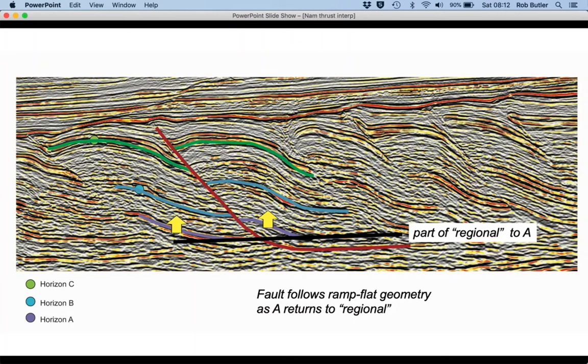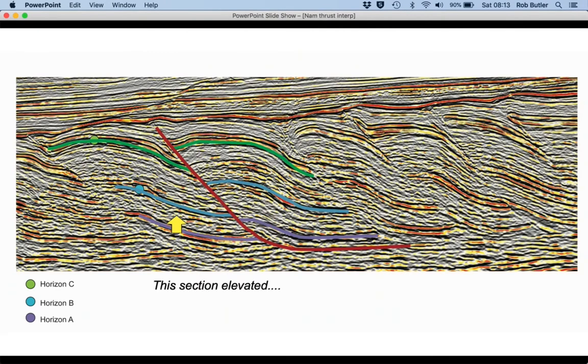Also notice that the mauve horizon in the footwall to the thrust we've picked so far also begins to move above regional as we move away from the thrust fault that we have identified. So if the rocks on the left have been moved up a bit above their regional, then presumably there's another fault that comes over to the left.